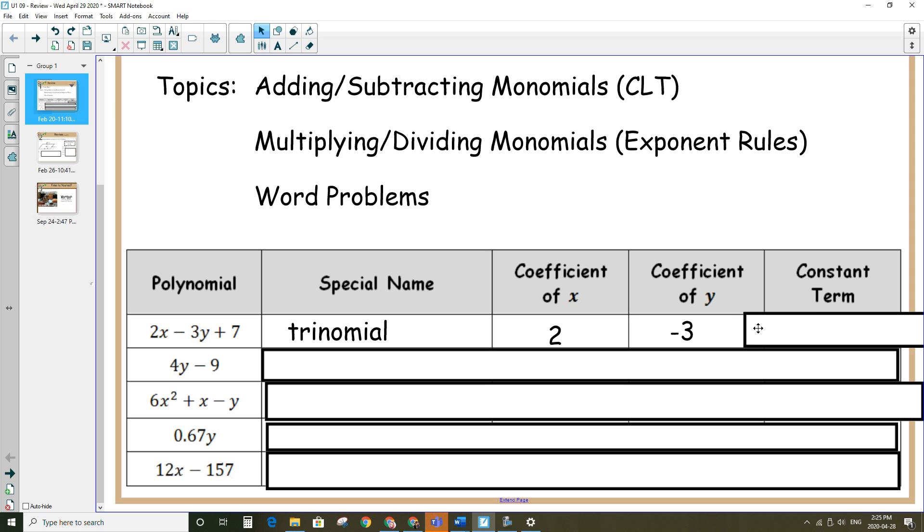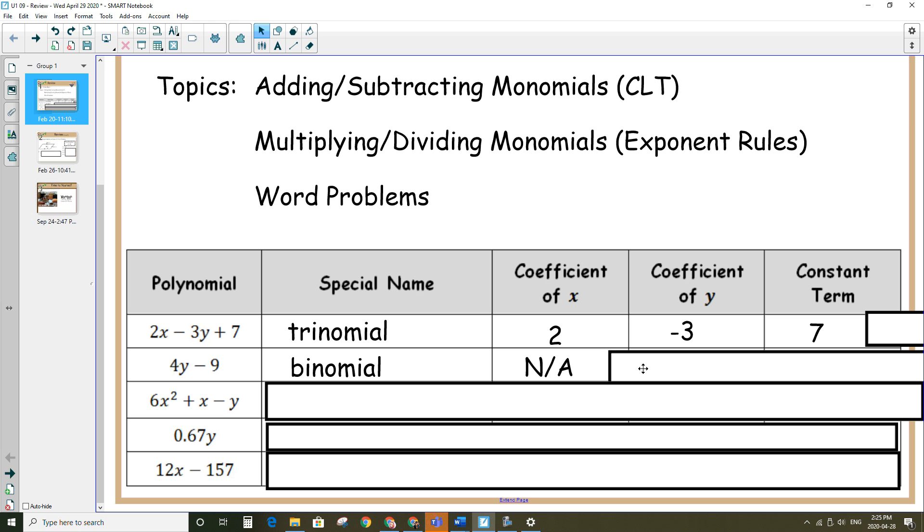Second example, special name, this has two terms, so it's called a binomial. The coefficient of x, there is no x term, so we just say not applicable. Coefficient of y would be 4, and the constant term would be the term that doesn't have any letter with it, which would be negative 9 in this case.